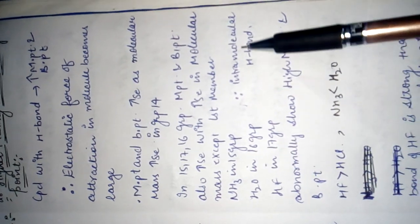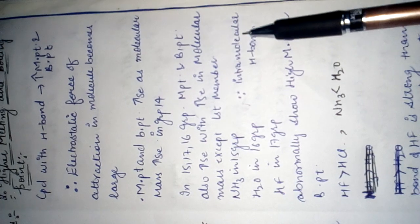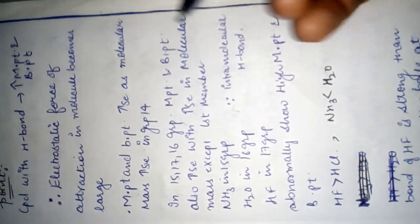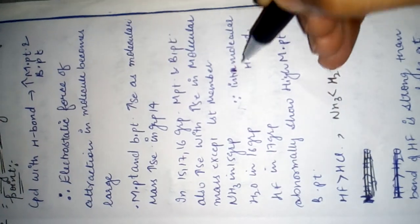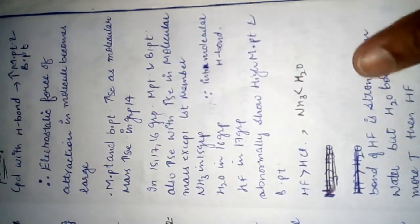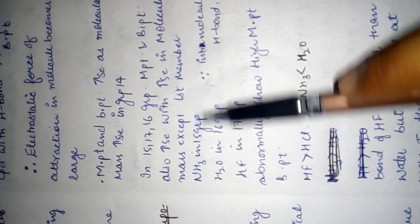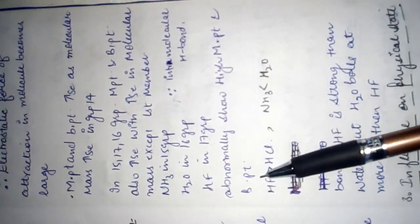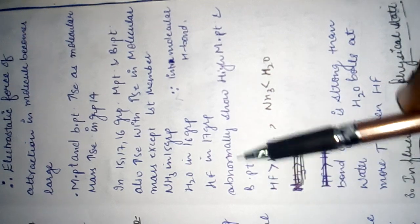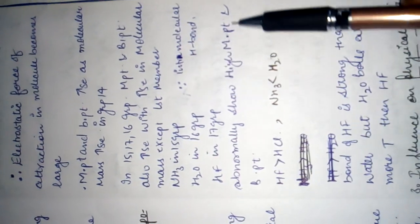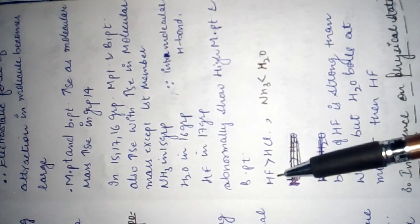For example, ammonia in group 15, water in group 16, and hydrogen fluoride in group 17 — these molecules have strong intermolecular hydrogen bonding, because they form hydrogen bonds from one molecule to another, and abnormally show high melting and boiling points.